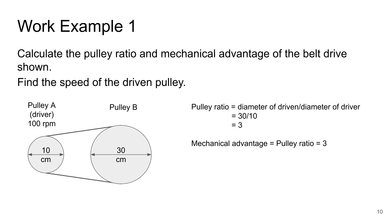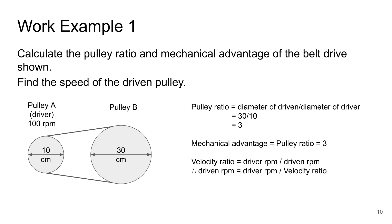We also know that mechanical advantage is equal to pulley ratio, so mechanical advantage is equal to 3. We have now calculated the pulley ratio and mechanical advantage of the belt drive. Velocity ratio equals the driver rotational speed divided by the driven rotational speed. Transposing this gives driven rotational speed equals driver rotational speed divided by velocity ratio. Since velocity ratio equals pulley ratio, we substitute in the values: 100 divided by 3 gives us 33.3 revolutions per minute.